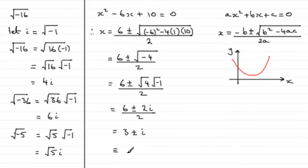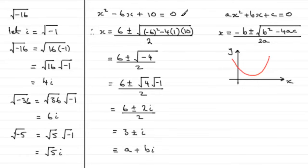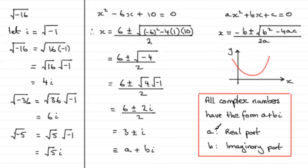Something of the form a plus bi — now whenever you get anything of this particular format, it's called a complex number. The first part is called the real part, and the last part, the part attached to the i, is called the imaginary part. So we have two complex numbers here — the roots of our quadratic equation are called imaginary roots: 3 plus i and 3 minus i. Any complex number has the form a plus bi, where a is the real part and b is the imaginary part.